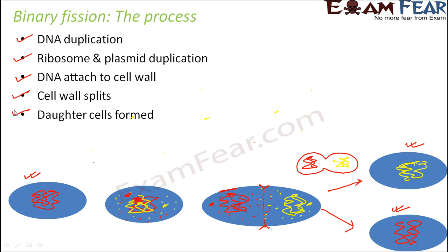The DNA replication process is bidirectional, moving away from the origin towards opposite poles. After duplication, the two copies of DNA move towards the two poles. Because of this movement, the cell elongates. The elongated cell's growing membrane helps in the transport of chromosomes. Once the chromosomes have cleared the midpoint of the elongated cell, the cytoplasm starts to separate.